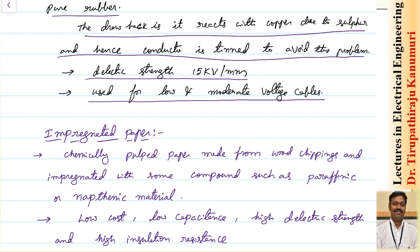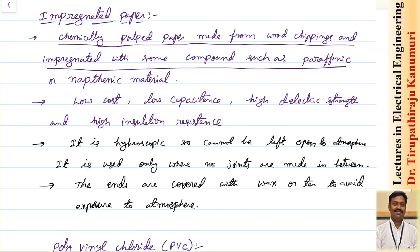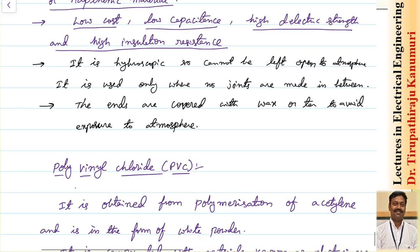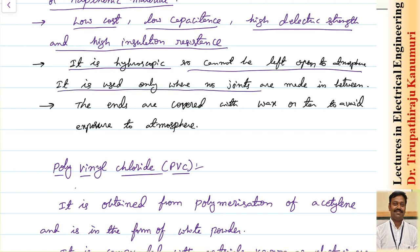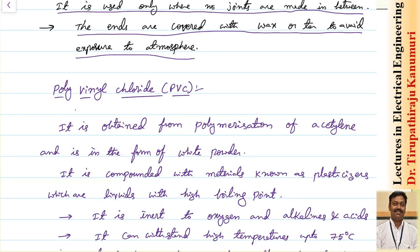Impregnated paper is the most commonly used cable insulating material. It is chemically pulped paper made from wood chippings and impregnated with compounds such as paraffin and naphthenic materials. Its advantages are low cost, low capacitance, high dielectric strength, and high insulation resistance. However, it is hygroscopic — it easily absorbs moisture, drastically reducing dielectric strength. Therefore, it cannot be left open to the atmosphere, no joints should be made mid-cable, and wherever the ends are cut they must be covered with wax or tar to prevent atmospheric exposure.